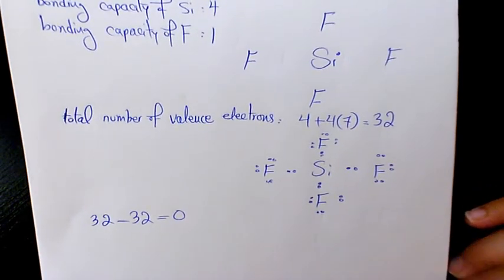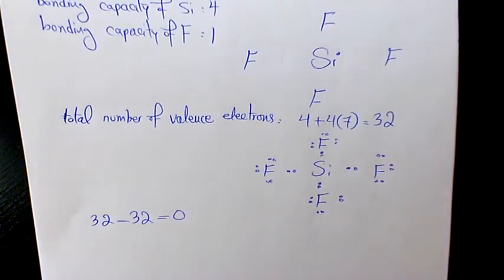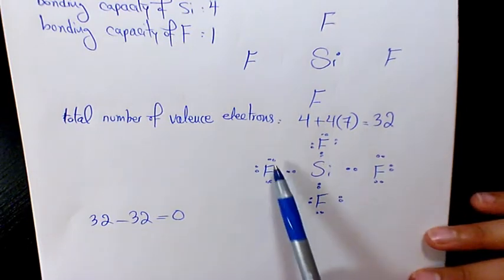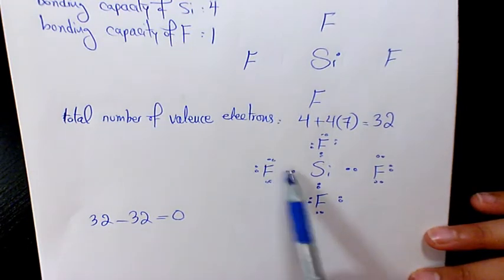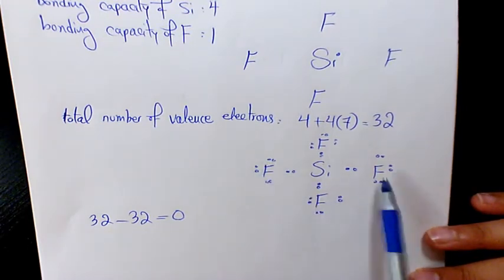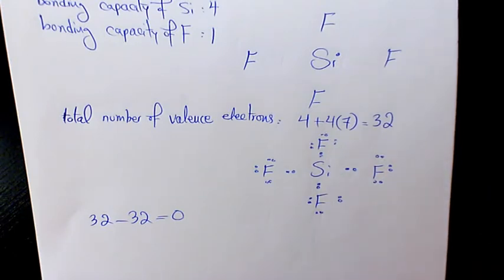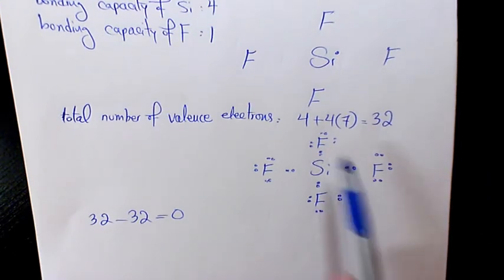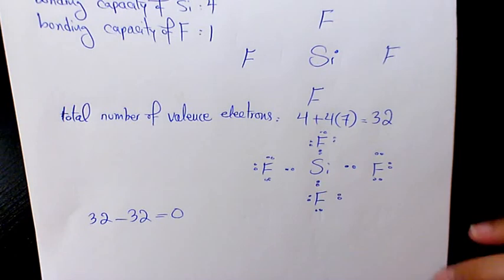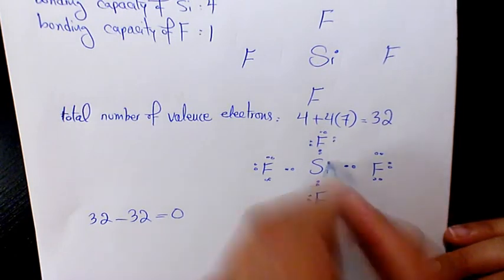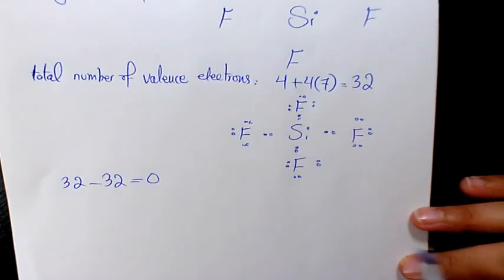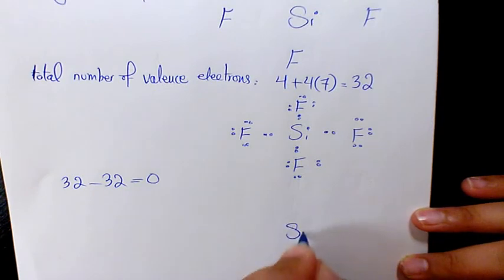Now we need to check if we have complete octets. Fluorine has 8 — all four fluorines check out. What about silicon? Counting the shared electrons: 2, 4, 6, 8. Silicon also has a complete octet. So the structure is complete.